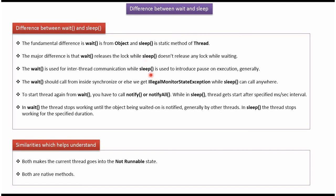Wait method is used for inter-thread communication while sleep method is used to introduce pause on execution.